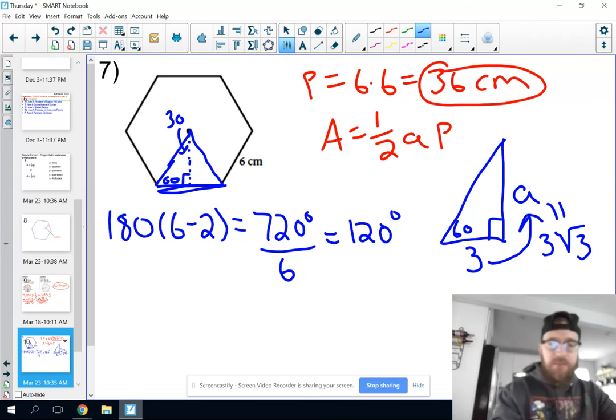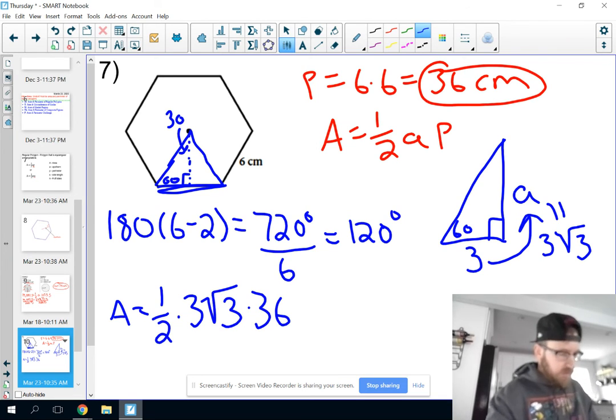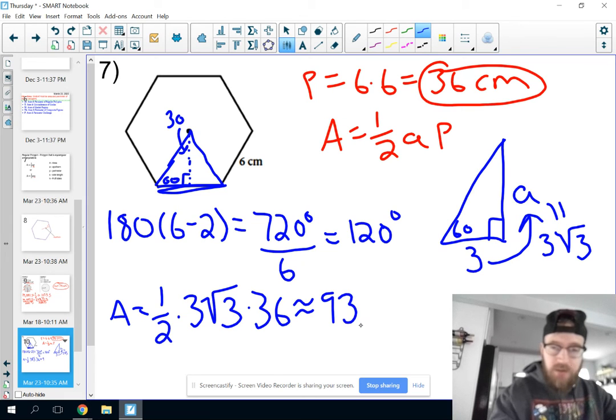We already have our perimeter, so the final step now is just to plug into our formula. 1 half times apothem times perimeter. Plug that all into your calculator. And you get an answer of area 93.5 centimeters squared.